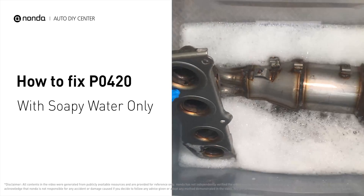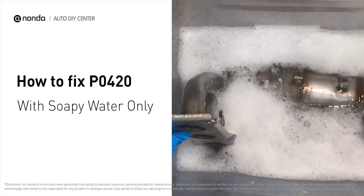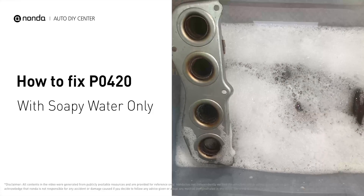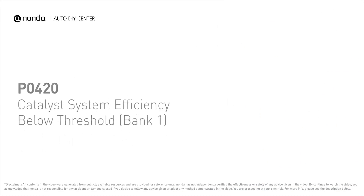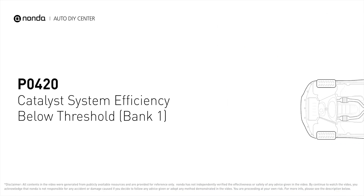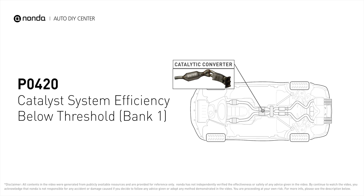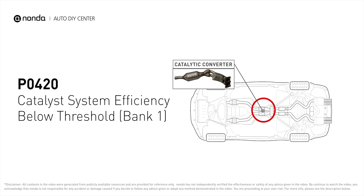With some soapy water, you can easily fix the P0420 error code by yourself. P0420 is one of the most common error codes — it means your catalyst system efficiency is below threshold near engine bank one, which indicates that the catalytic